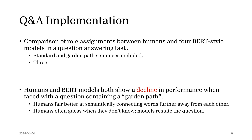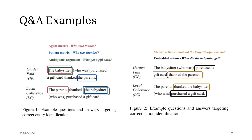Everybody shows about the same average decline when going from a standard control question to the garden path examples. The sentences are intentionally confusing, and both the models and humans all decline about the same percent — around 15%.